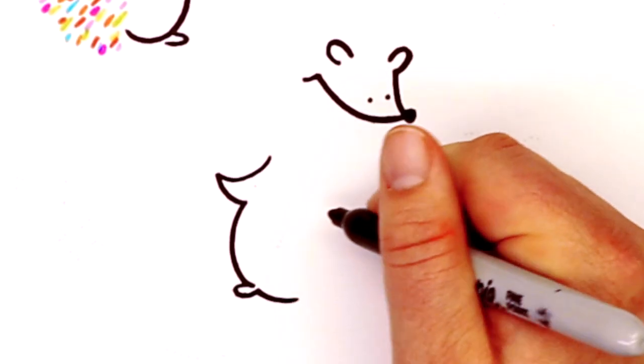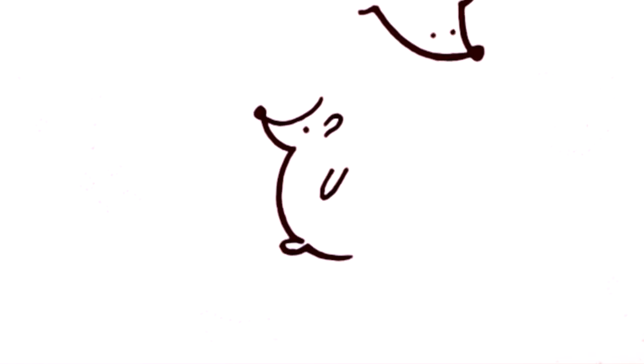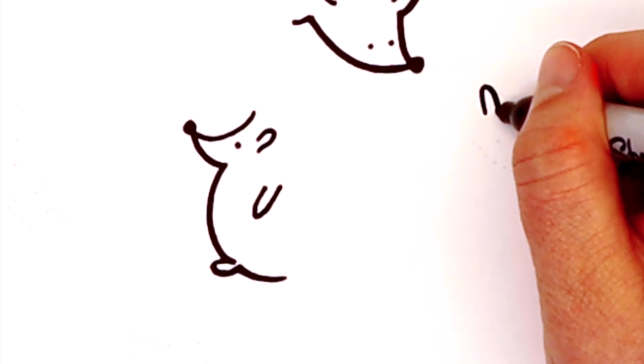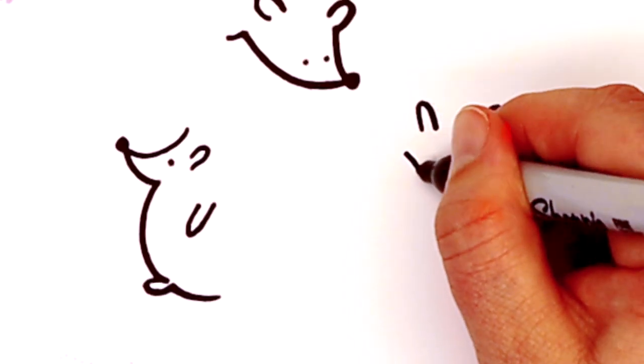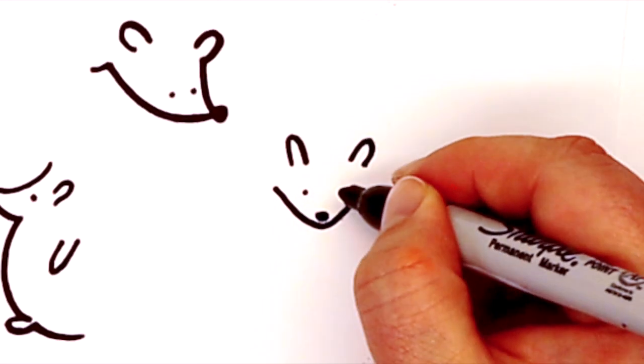Our noses are always pointy, our bellies round, and little U's for the feet and the arms and the ears. And don't forget that nose. Okay, this cutie guy, we're going to give them a very simple face. Just follow along the best you can.